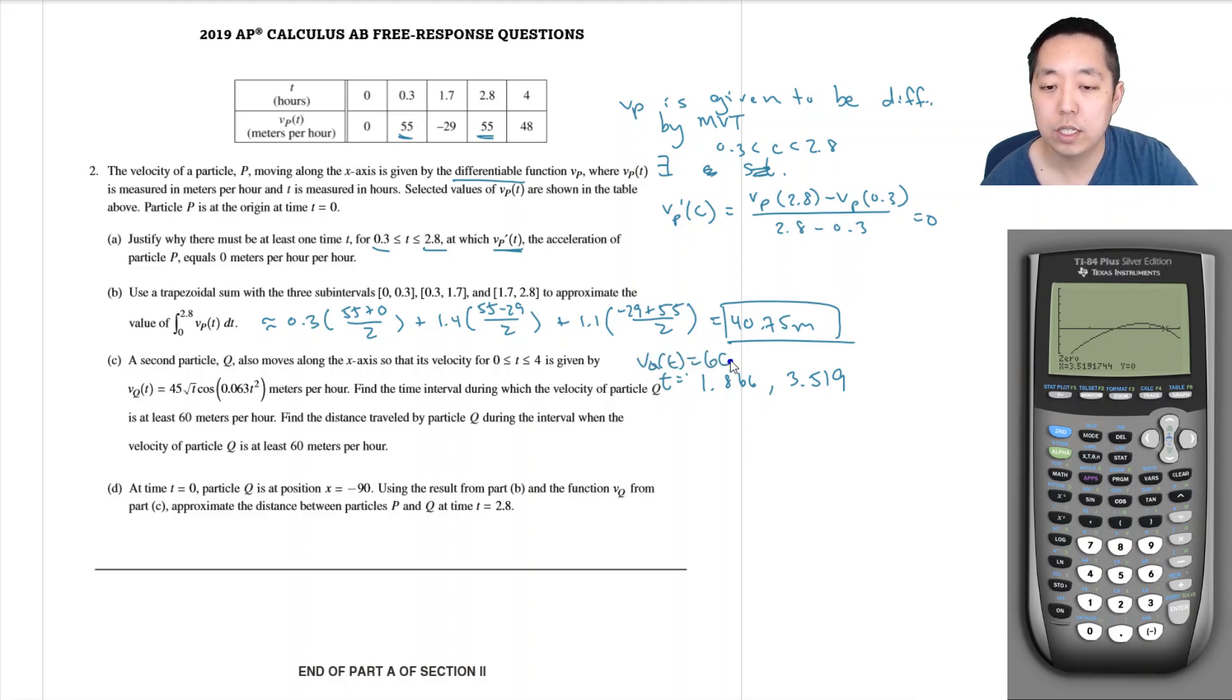Basically I'll set this up: Vq of t is equal to 60 at these points. So find the distance traveled. The distance traveled is always the integral from 1.866 to 3.519, technically absolute value of vq of t, dt. Technically because it's over 60 meters per hour, it's always positive, so you don't have to put the absolute values. But technically distance traveled is absolute value.